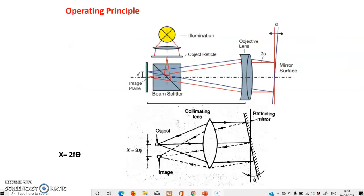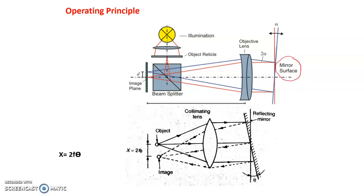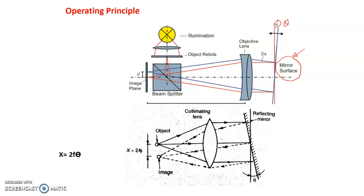The operating principle of the autocollimator can be explained in two parts. The first part is without any deflection to the mirror surface, and the second part is with a deflection of an angle theta on the mirror surface. Let us consider the first part, where the mirror does not have any deflection — it is purely vertical — and that condition is shown with the red color beams.